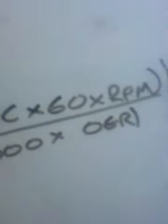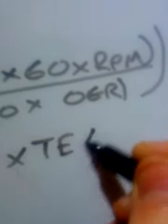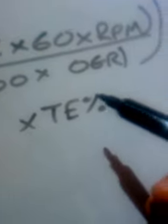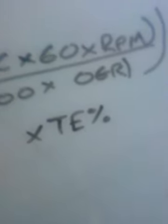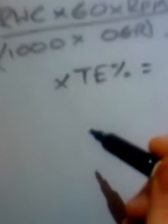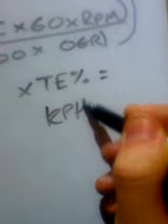Do the top part first, then divide it by the bottom. If you're doing this on a calculator, put all that in brackets, then times it by the transmission efficiency, which is usually a percentage. If it was 90% efficient, you would multiply by 0.9 — usually bikes are over 90% efficient. That gives you your road speed in kilometres per hour.